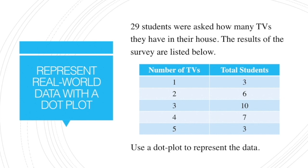So here's an example. We have 29 students were asked how many TVs they have in their house. The results of the surveys are listed below. And we are to use a dot plot to represent this data. So what we're looking at here is the number of TVs and the number of students.